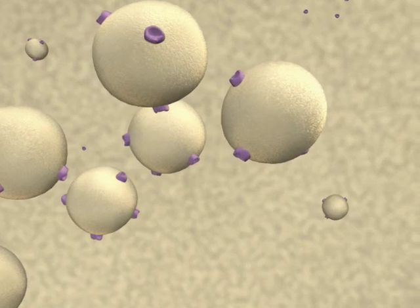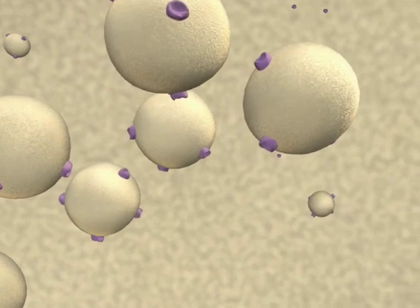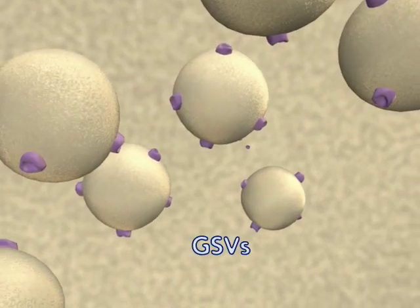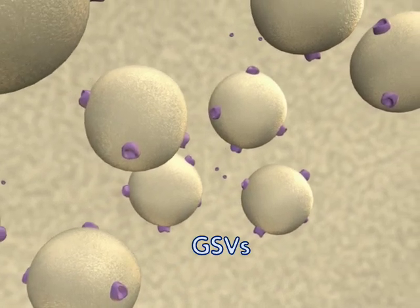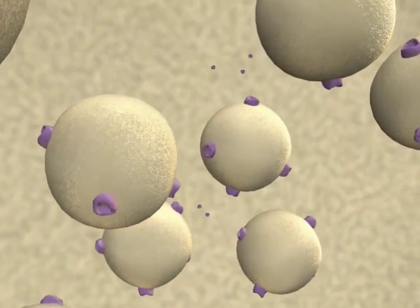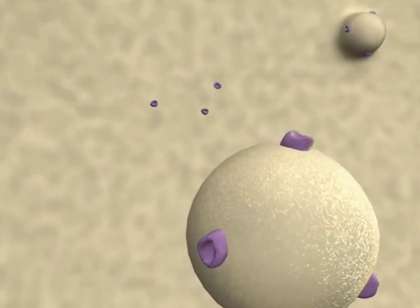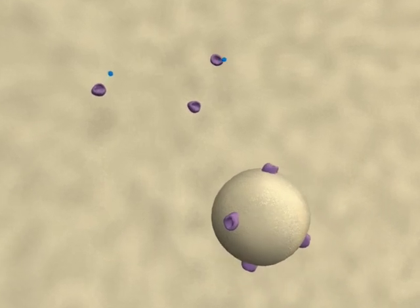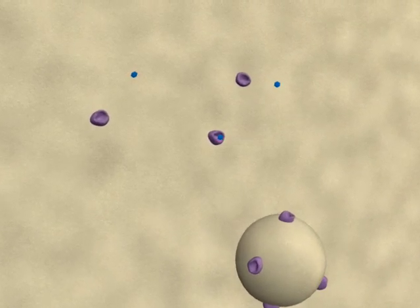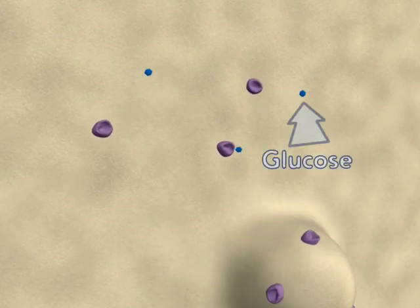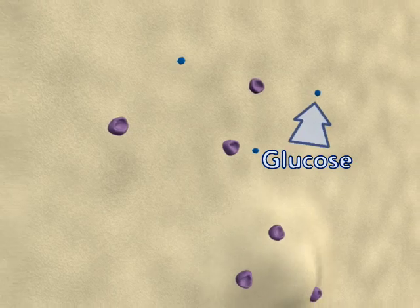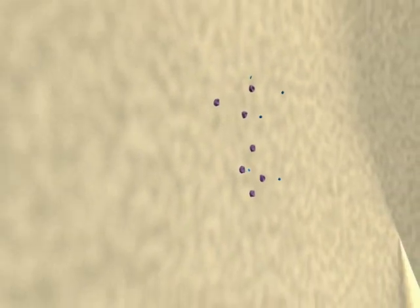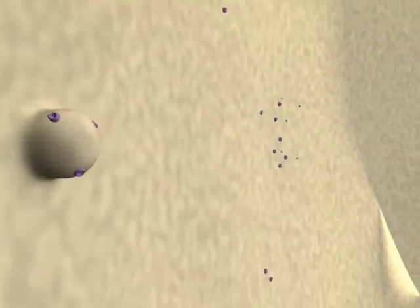The vast majority, about 90%, is found in GLUT4 storage vesicles, or GSVs. The membrane-bound GLUT4 proteins are needed to transport even the low level of glucose into the cell. Here you can see a few glucose molecules moving into the cell. There is a steady recycling of the plasma membrane GLUT4 protein pool.